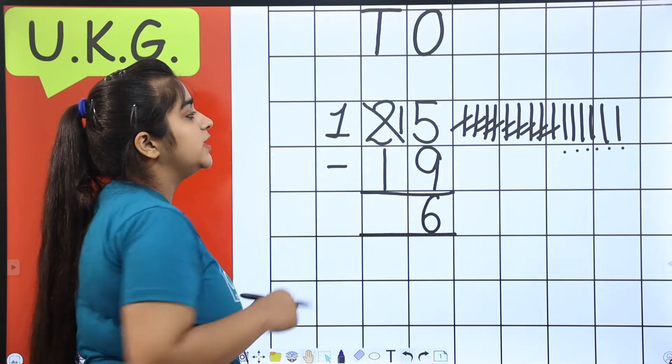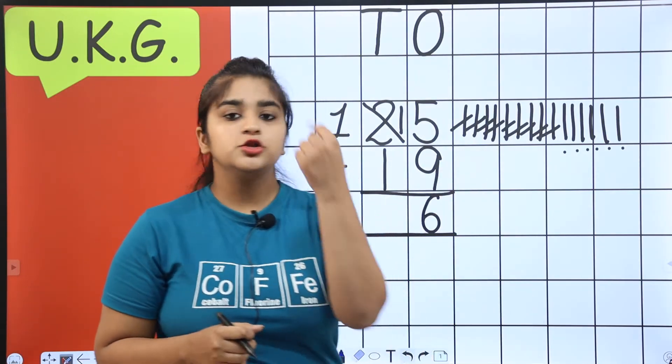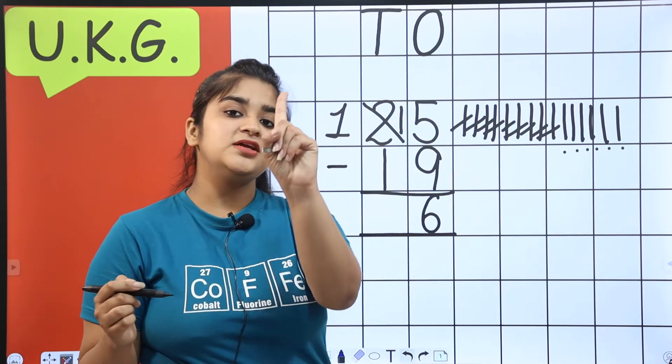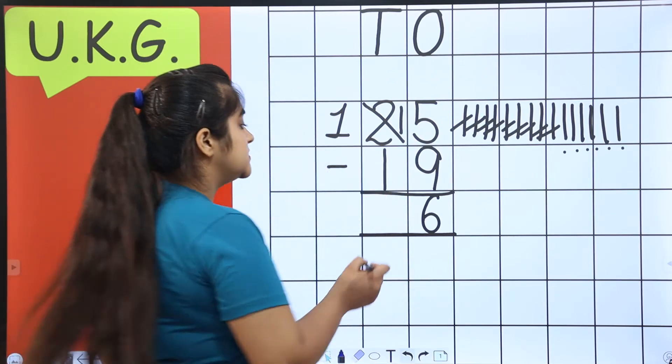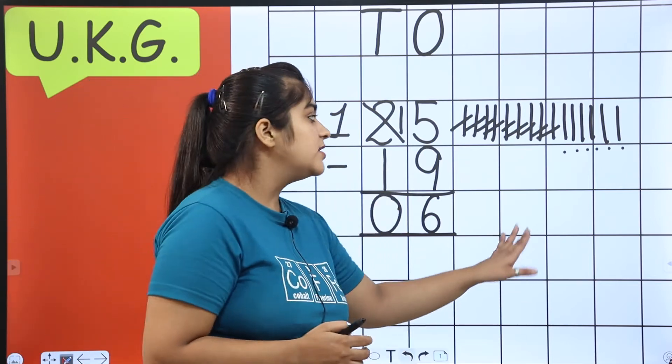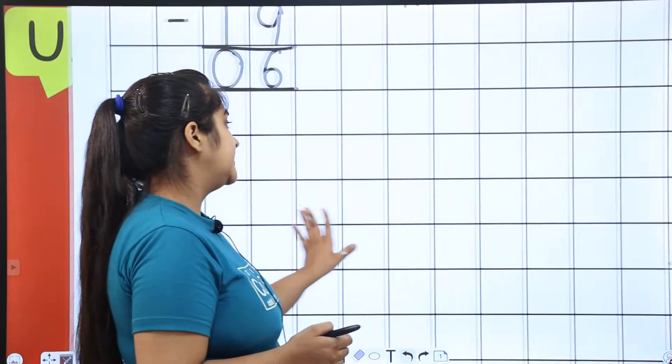After that, when 2 gave 1 to 5, then there was 1 left. And 1 went from 1. So, what did it become? 0. Means nothing. Understood? Let's do one more sum. One more.